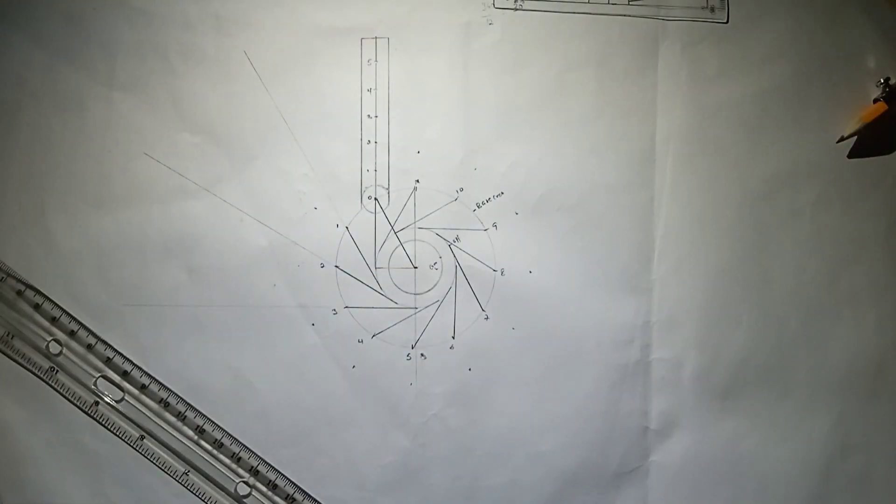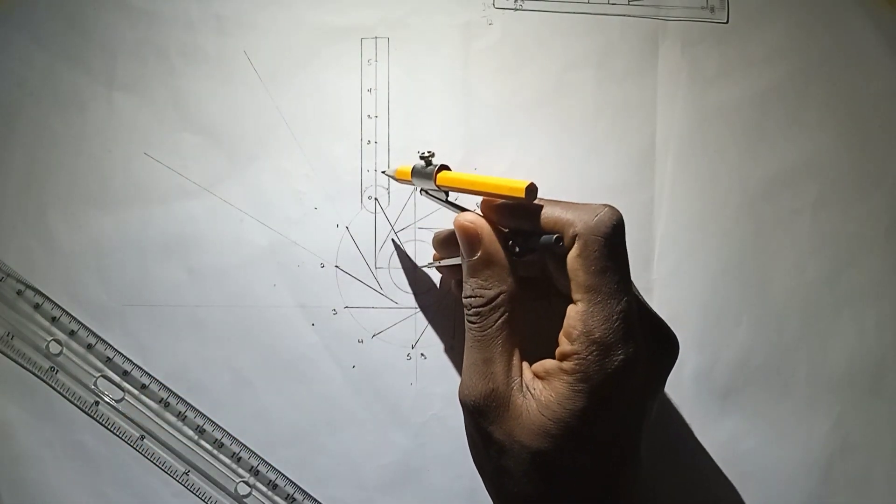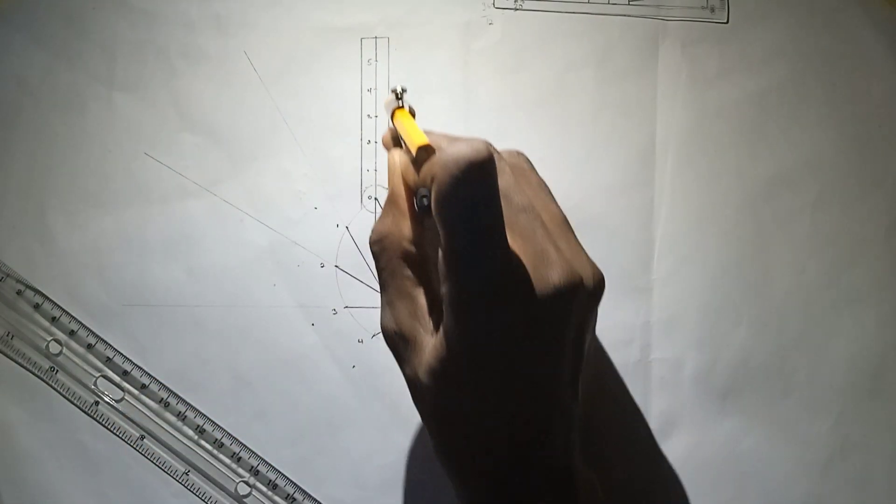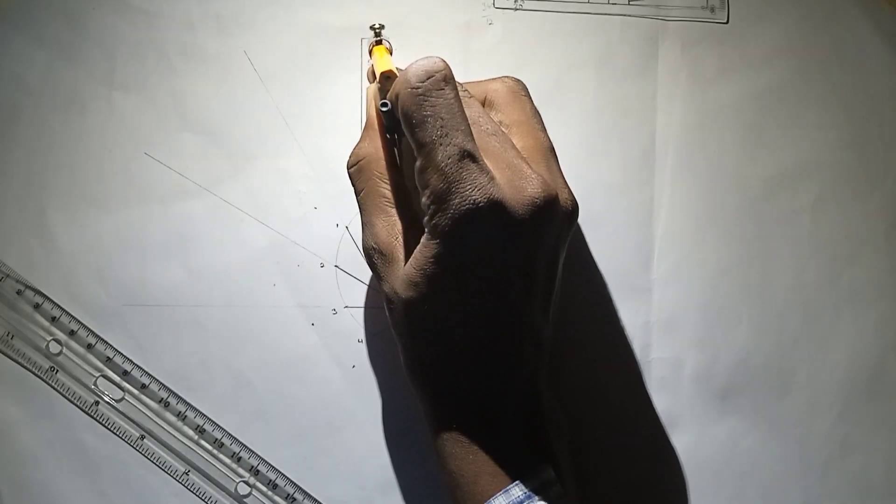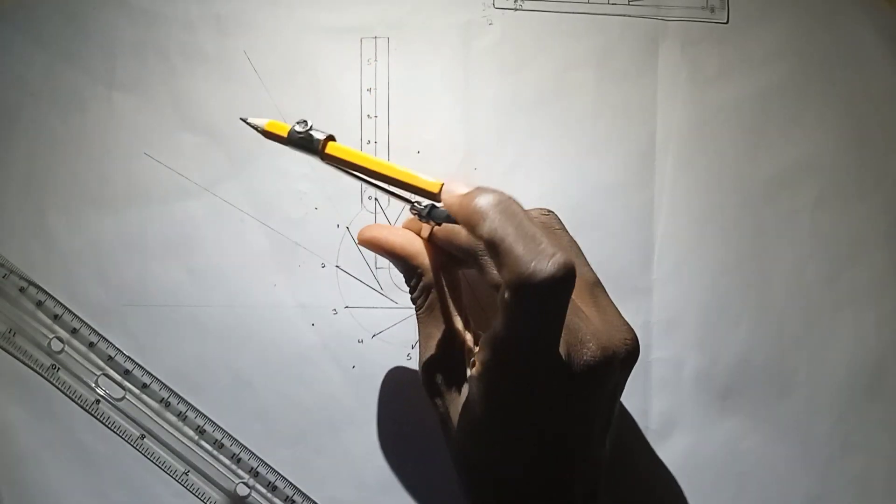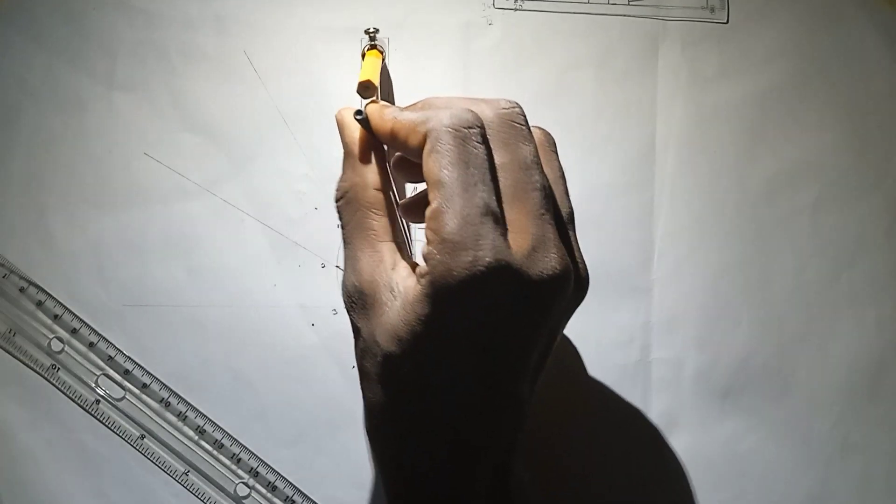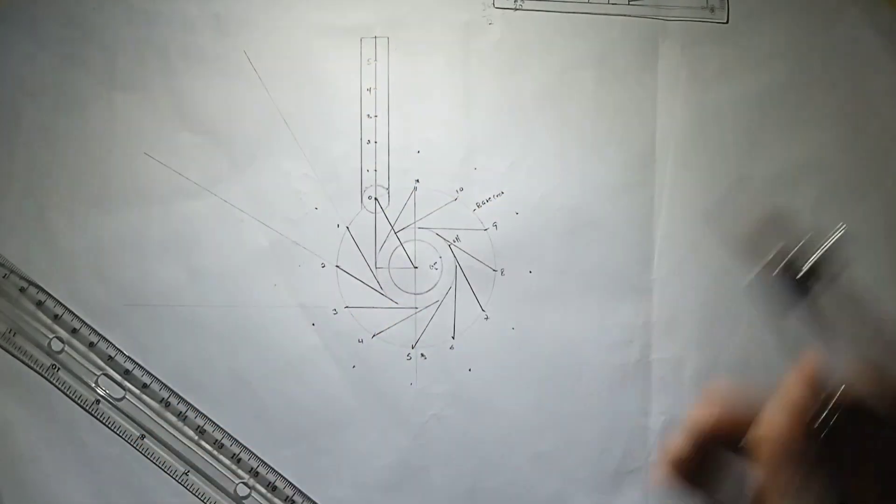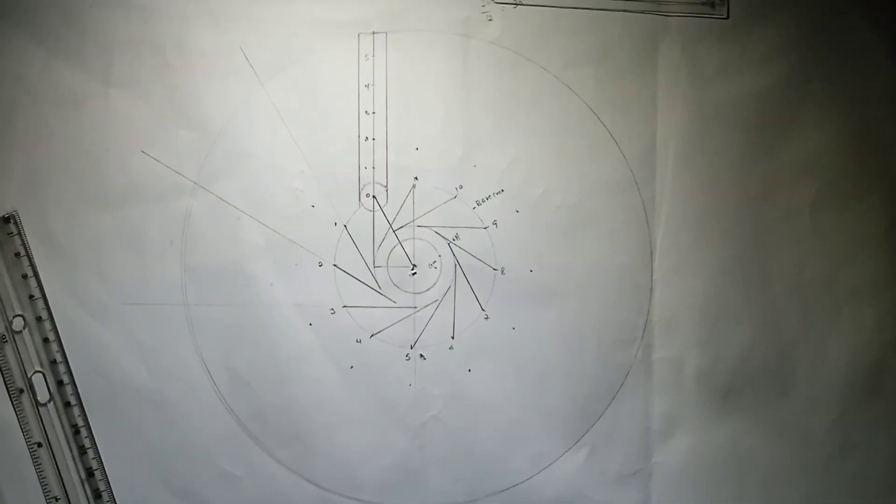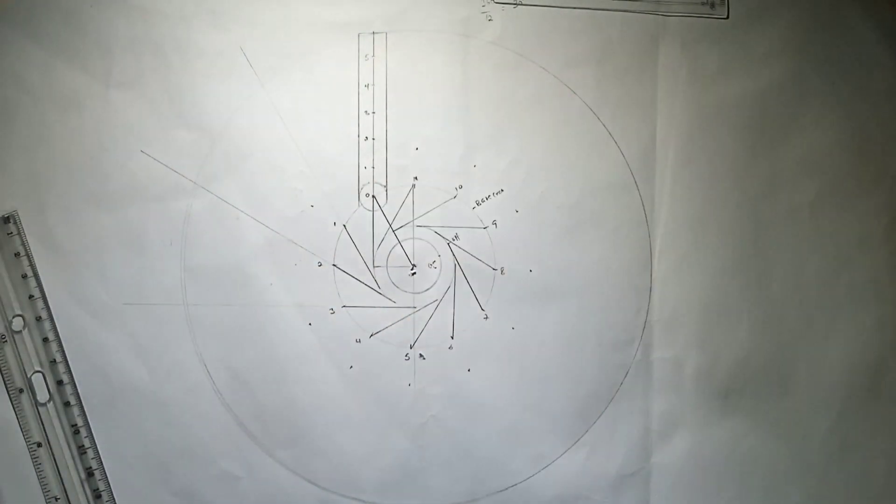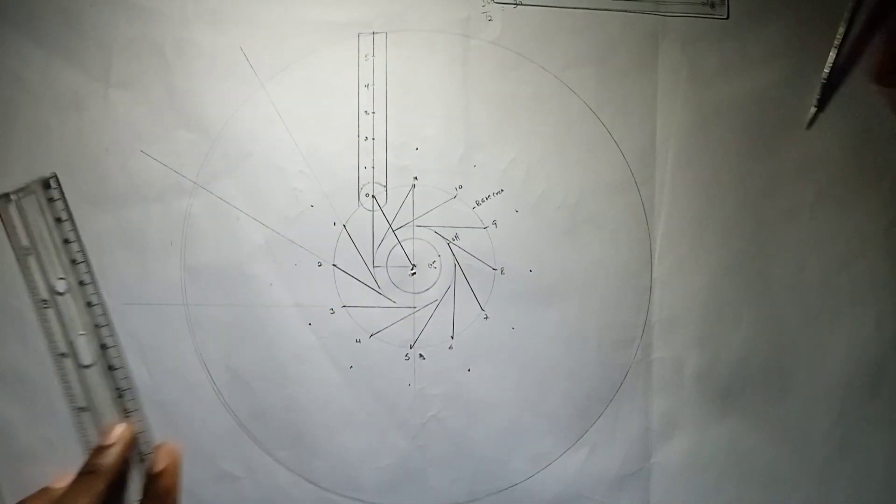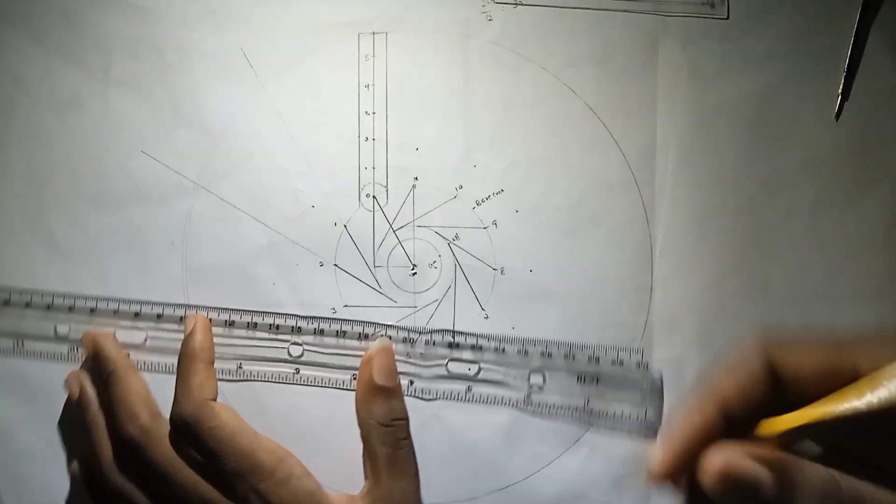But before we do the extendments we need to know where actually these lines will stop. I'll pin at this middle point, elongate to the top of my roller follower and I'll draw a big circle. The circle will serve as where it will stop. So I drew this big circle. I know that all my lines should be stopping at the peak of this circle.